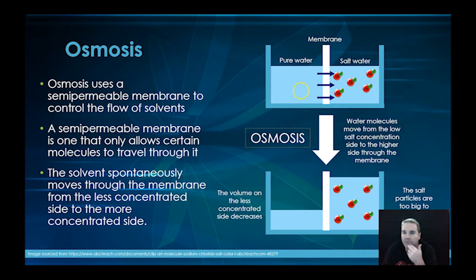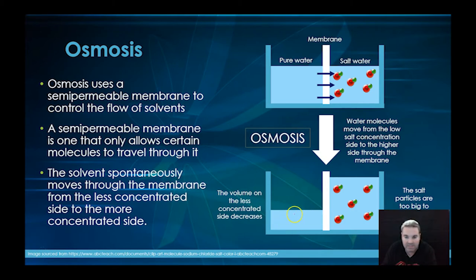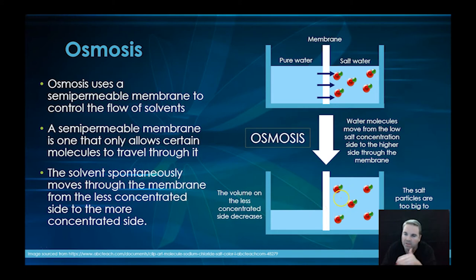A solvent spontaneously moves through the membrane from the less concentrated side to the more concentrated side. Here we've got pure water on one side and salty water on the other. The less concentrated pure water side flows over to the salty side to try to make it less concentrated — equalizing it in a sense. You can see the water level rises on the salty side and decreases on the pure water side as water molecules move through.